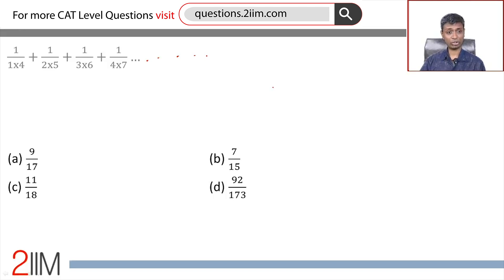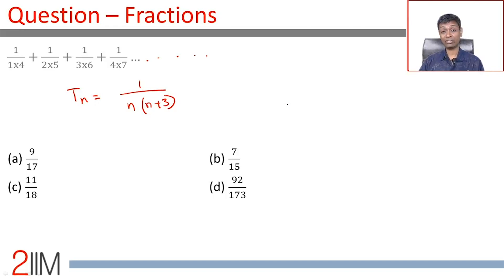Thankfully the pattern is simple. This is 1/(1×4), 2×5, or the nth term in the sequence is nothing but 1/(n(n+3)). If that were complicated then we'd be in jail. That part is simple, but it's an infinite sequence. 1/(n(n+3)) as an infinite sequence.